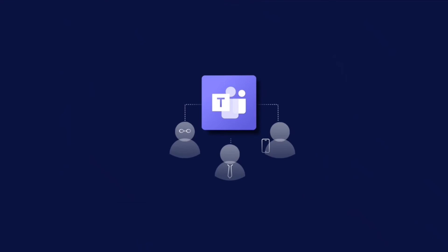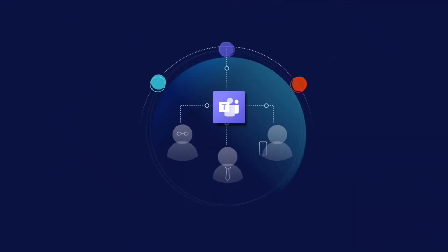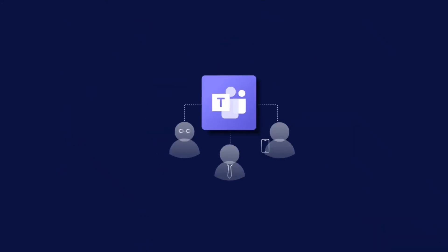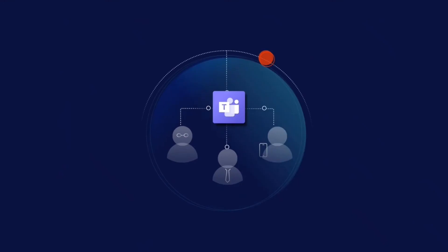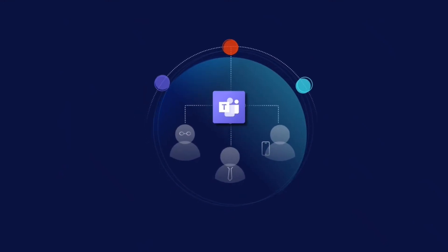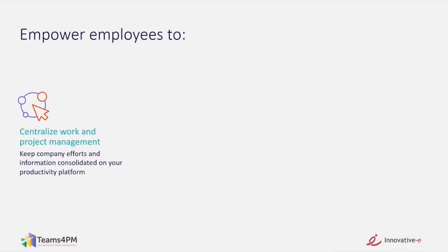Now, project managers, team members, and executives can use the tools they want without ever leaving Teams. Teams for PM enables applications to collaborate among themselves, thus eliminating the need for context switching. All projects, regardless of complexity, are managed centrally in Teams for PM. Now you can empower your employees to centralize work and project management, keeping your company efforts and information consolidated on your productivity platform.